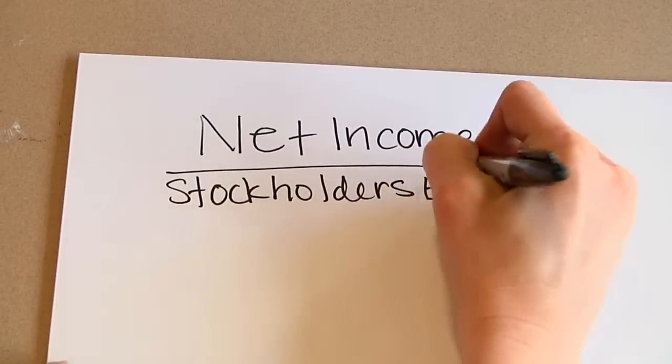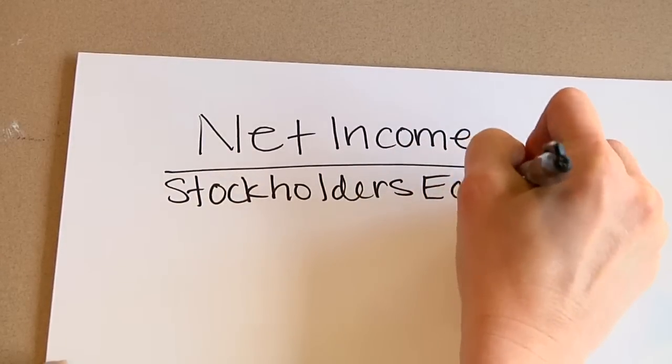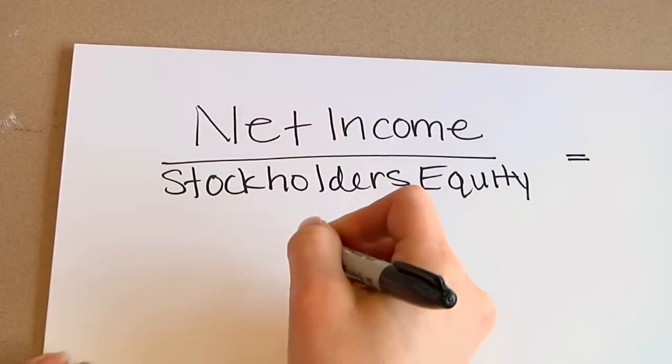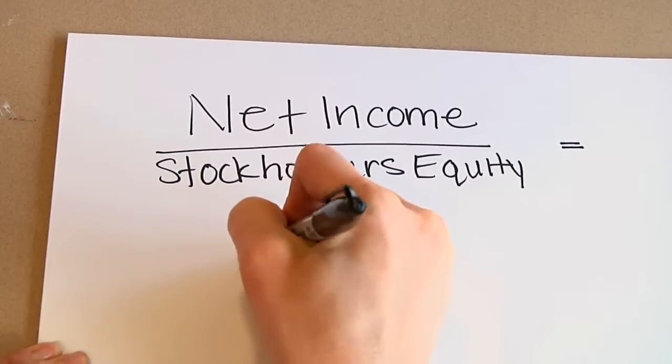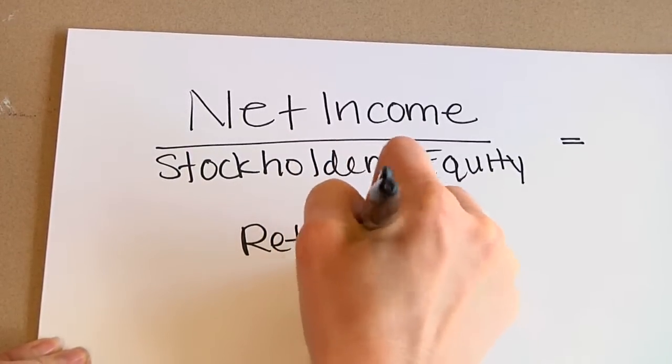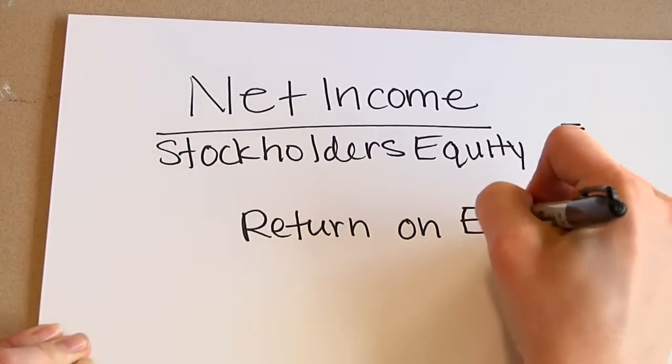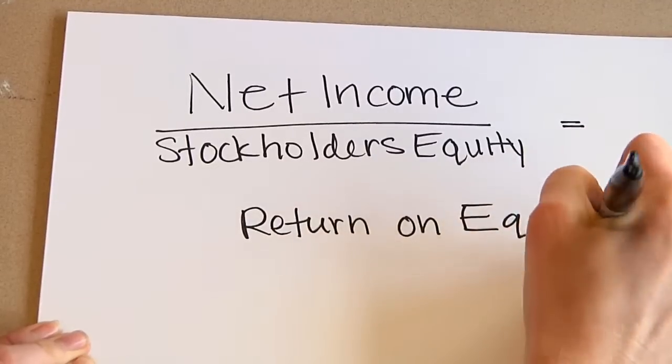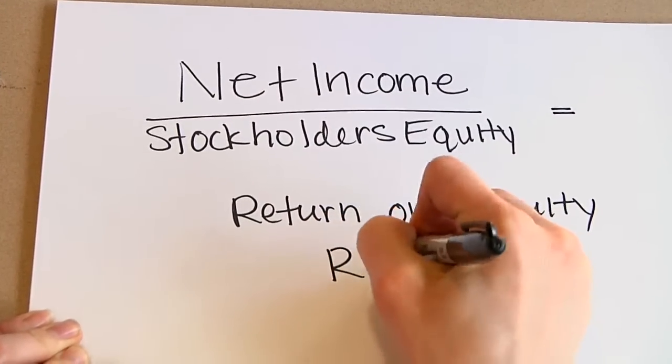I'm here to talk to you today about what return on equity means. If you own a small business, or even if you're trying to buy stock in a large business, you want to look at how much they make compared to how much money people have put into the company. Return on equity is the net income divided by the shareholder's equity — the total amount of money the shareholders have put into the company. This is used to measure the efficiency of management — it tells you if they're doing a good job with the money and can make a lot of money with what they've been given, or if they're having a struggle.